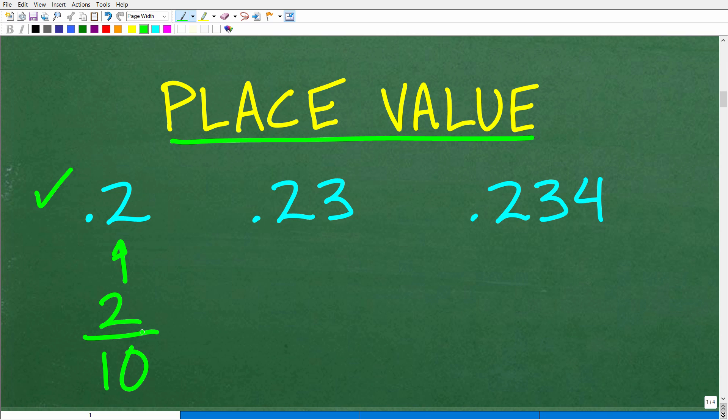If you said point two, that's excellent. I'll give you credit for it. But let's suppose I said you cannot use the word point. Don't use the word point. How else can we say this value? Now this is where we're going to have to use place value. So this number, point two, is what we would call two tenths. This is the fraction two tenths because the two right here, this decimal, is in the tenths place.